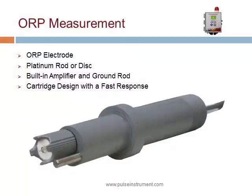ORP is measured by a probe or electrode, which is similar to a pH electrode except that it has a pure platinum sensor tip. It may be mounted inline or in-tank, and needs approximately once-a-month cleaning and calibration.